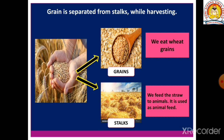Moving on to the third example. Here, grains are separated from the stalk during harvesting. We don't eat the stalk, so we separate the grain from it. The grains are eaten and the stalks are used as animal feed.